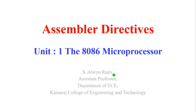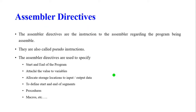Welcome to the microprocessor and microcontroller lecture series. In this lecture we are going to see what assembler directives are used in the 8086 microprocessor. An assembler directive is a special code placed in the assembly language program to instruct the assembler to perform a particular task or function.